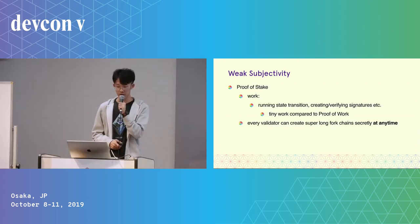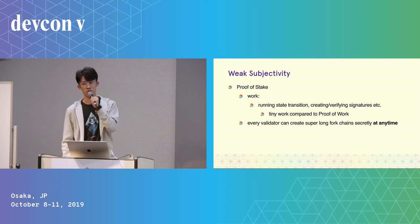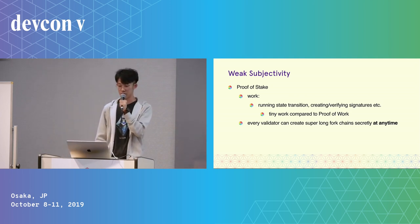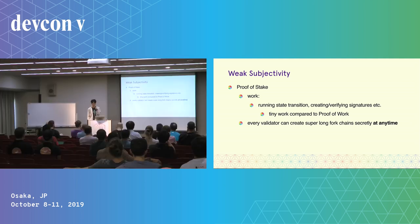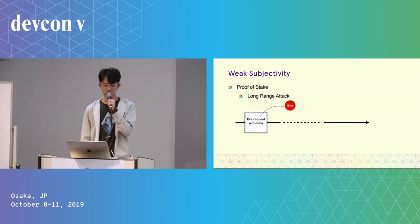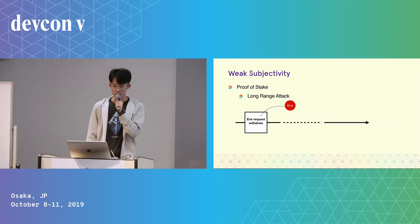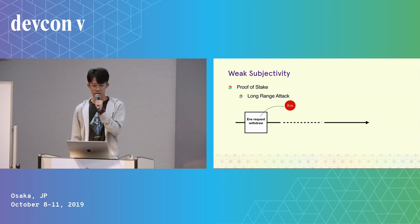But in proof of stake, the work could be like running state transition, creating and verifying signatures. But this work is tiny compared to proof of work. So every validator can create super long fork chains secretly at any time.